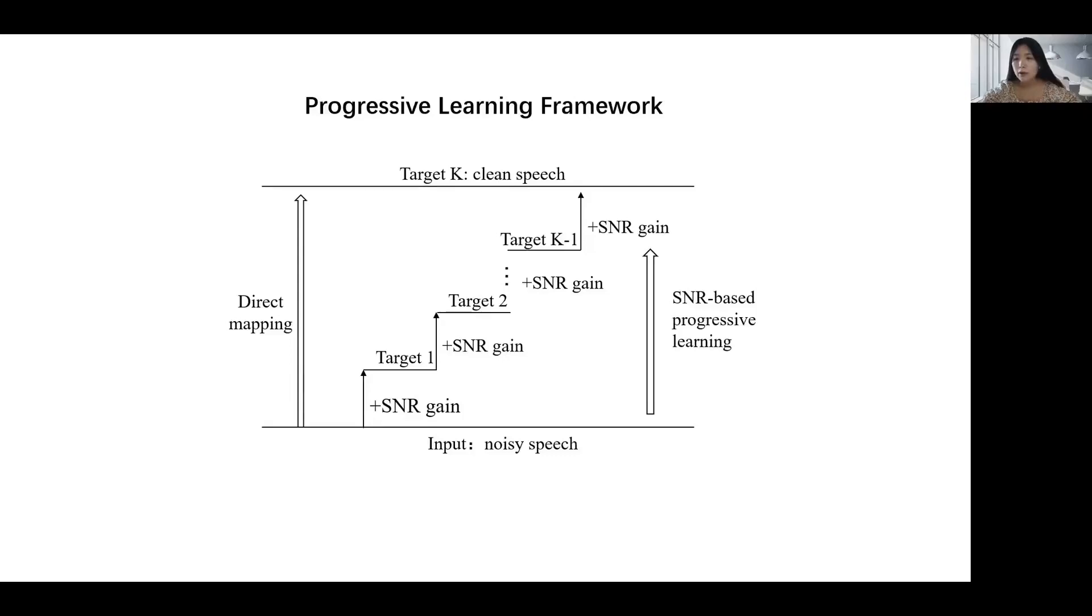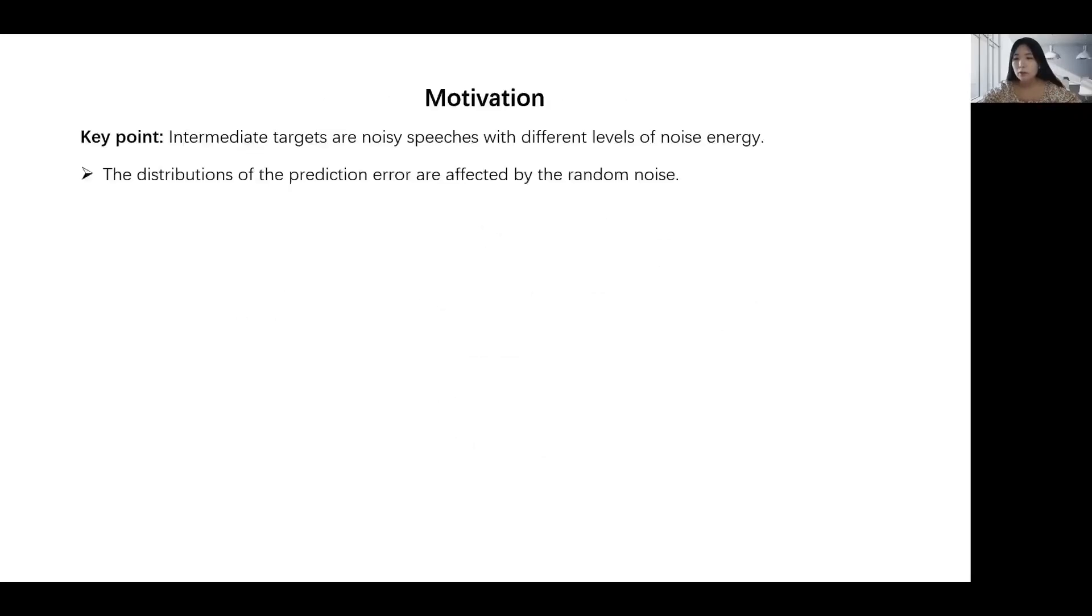However, a key point of the progressive learning framework is the intermediate targets are noisy speeches with different levels of noise energy. On the one hand, the distributions of the prediction errors are affected by the random noise. On the other hand, the prediction error values vary among different target layers.